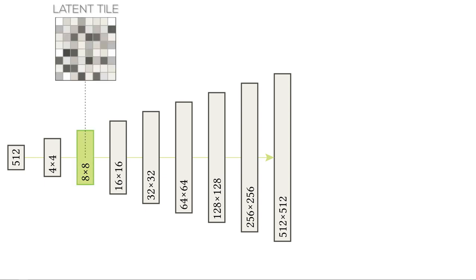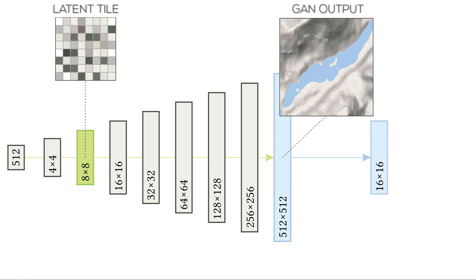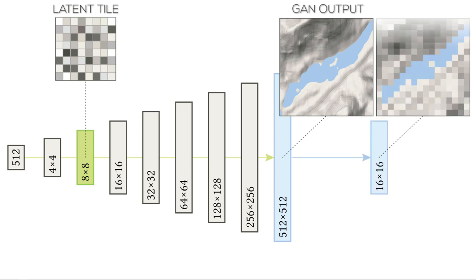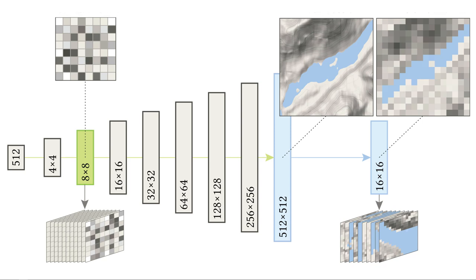We extract latent tiles at an intermediate stage from the network. These latents are stored along with a downsampled representation of the corresponding generated image.